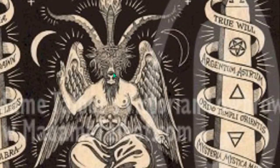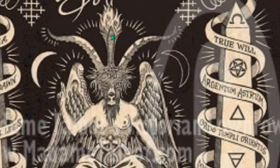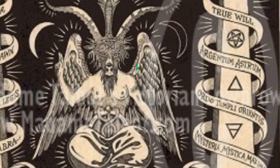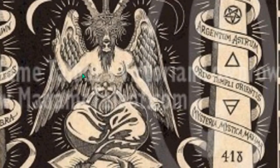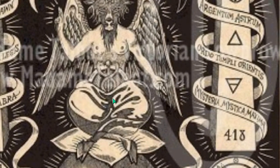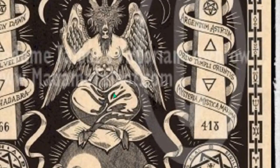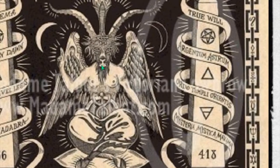This is the goat head. It has a Luciferian torch of enlightenment. It is an angelic being. It has female breasts and a male phallus, and the male phallus has serpents intertwining, like a DNA strand or a double helix. You have legs that are the goat's legs. You also have this entity doing the as above, so below sign.